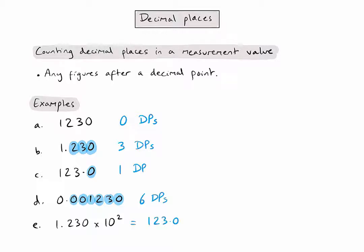Now we can see that after the decimal point, when it is fully expressed, there is only one figure. So this value has one decimal place.